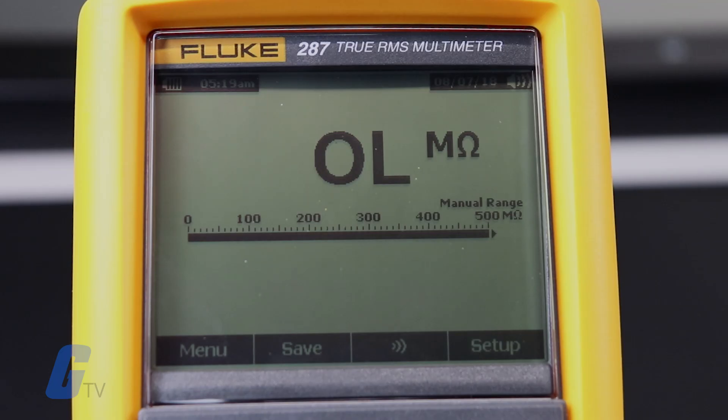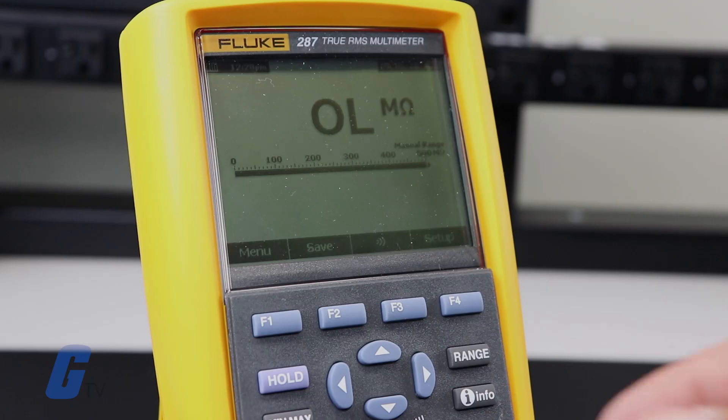If your multimeter reads close to zero, then your range is probably set too high. Adjust your range to a lower setting and try again.